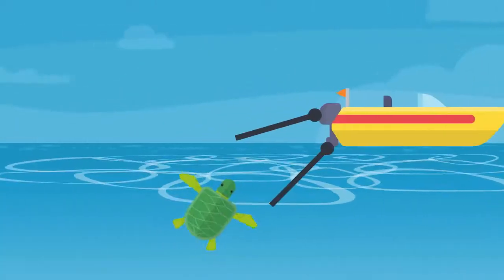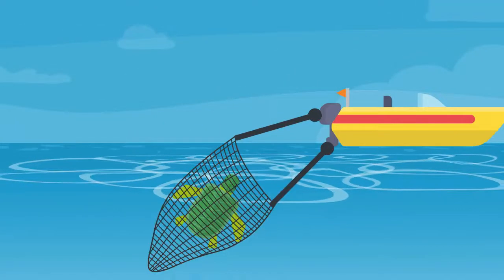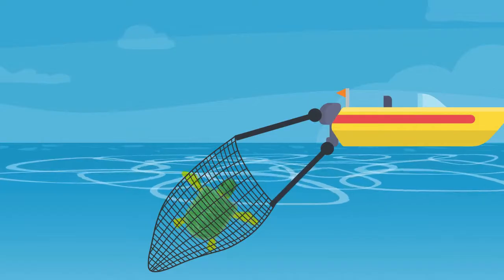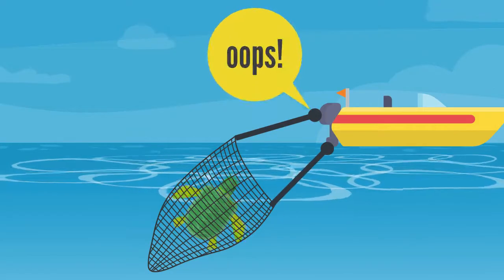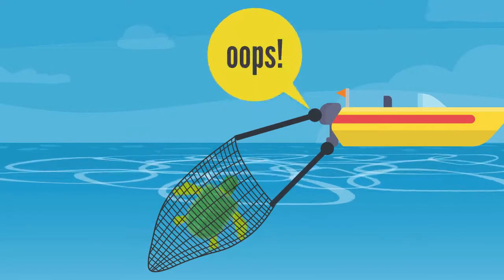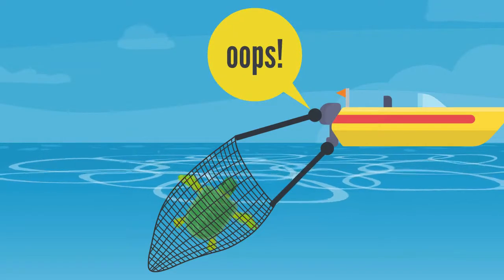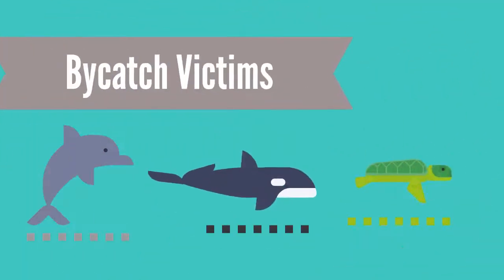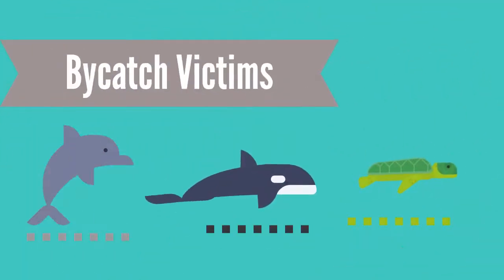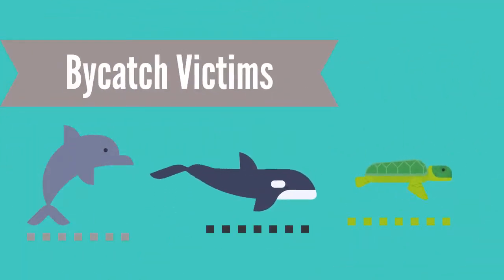There are also bycatch dangers. This is when other marine animals are accidentally caught in massive nets while fishing for a different animal. Turtles, dolphins, and whales are often the biggest victims of bycatch.